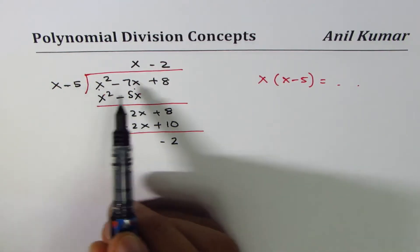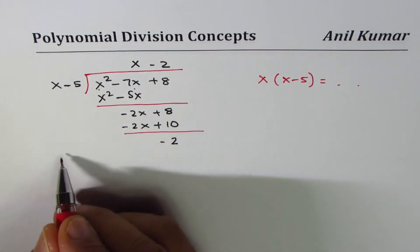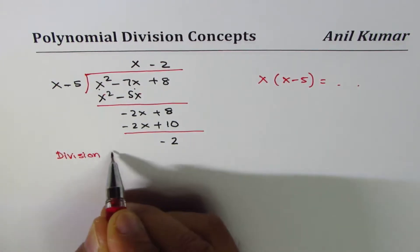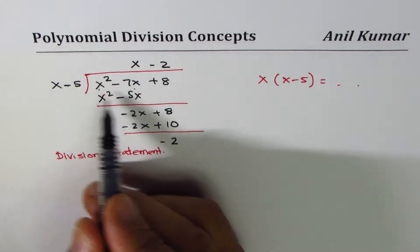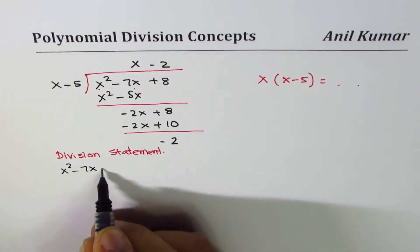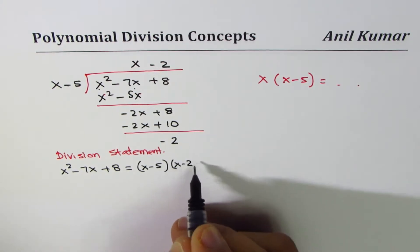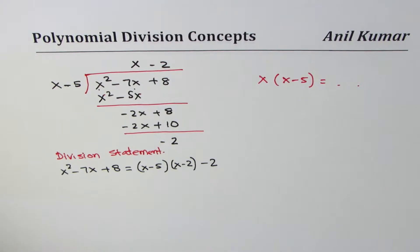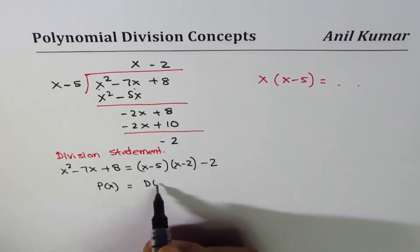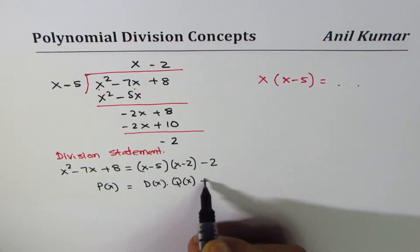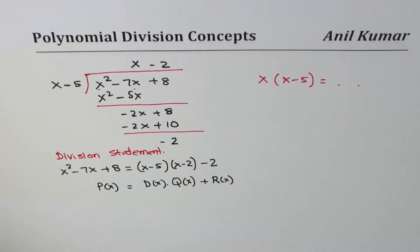Since we get a remainder, that means x minus 5 is not a factor. Now let's write the division statement. The polynomial x squared minus 7x plus 8 equals the product of divisor and quotient, which is (x minus 5)(x minus 2), plus the remainder minus 2. So: polynomial equals divisor times quotient plus remainder.